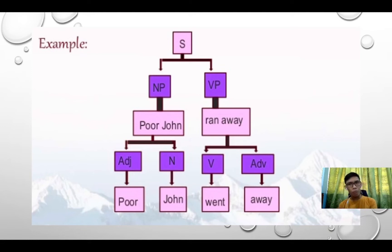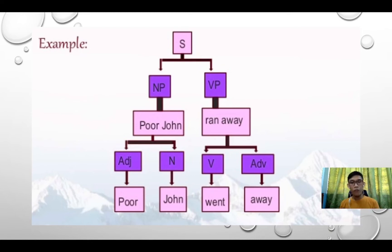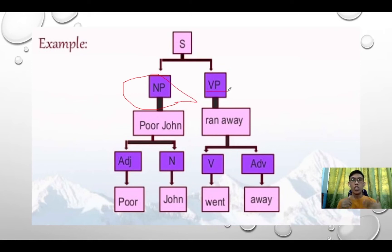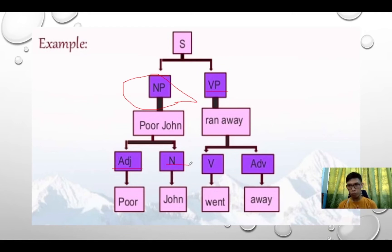By using labeling, the first section 'poor John' can be labeled as a noun phrase, because it is composed of an adjective 'poor' and a noun 'John.' 'Ran away' can be labeled as a verb phrase. These labels — NP and VP — are usually called nodes. To get the ICs of the two sections, we again divide each: 'poor' is labeled as adjective and 'John' as noun. The other section 'ran away' can be divided into 'ran,' labeled as verb, and 'away,' labeled as adverb.